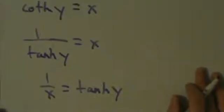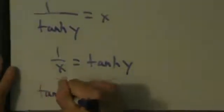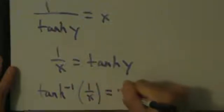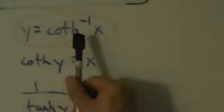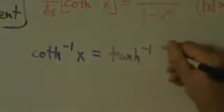This is the same as saying 1 over x equals tanh(y). From that step, you can multiply both sides by tanh(y) and divide both sides by x to get that. So this is the same as saying inverse tanh of 1 over x equals y. So we have y equals inverse tanh of 1 over x, and we also have y equals coth inverse of x. Therefore, coth inverse of x equals inverse tanh of 1 over x.